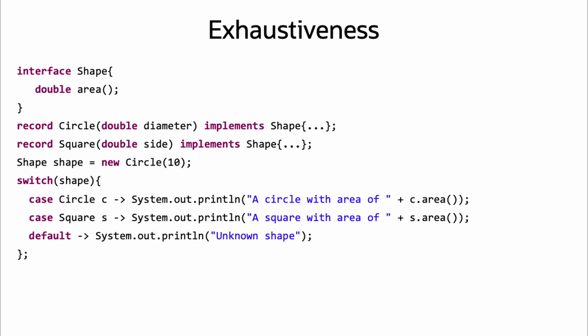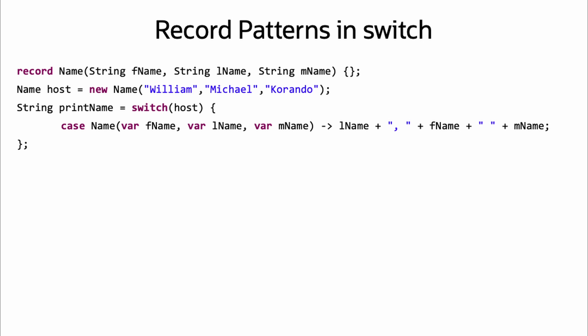In this case, a default case is needed as shape is no longer a sealed interface. Note though that null is not part of the exhaustiveness check, as it can already be handled by switch by throwing a NullPointerException if encountered.